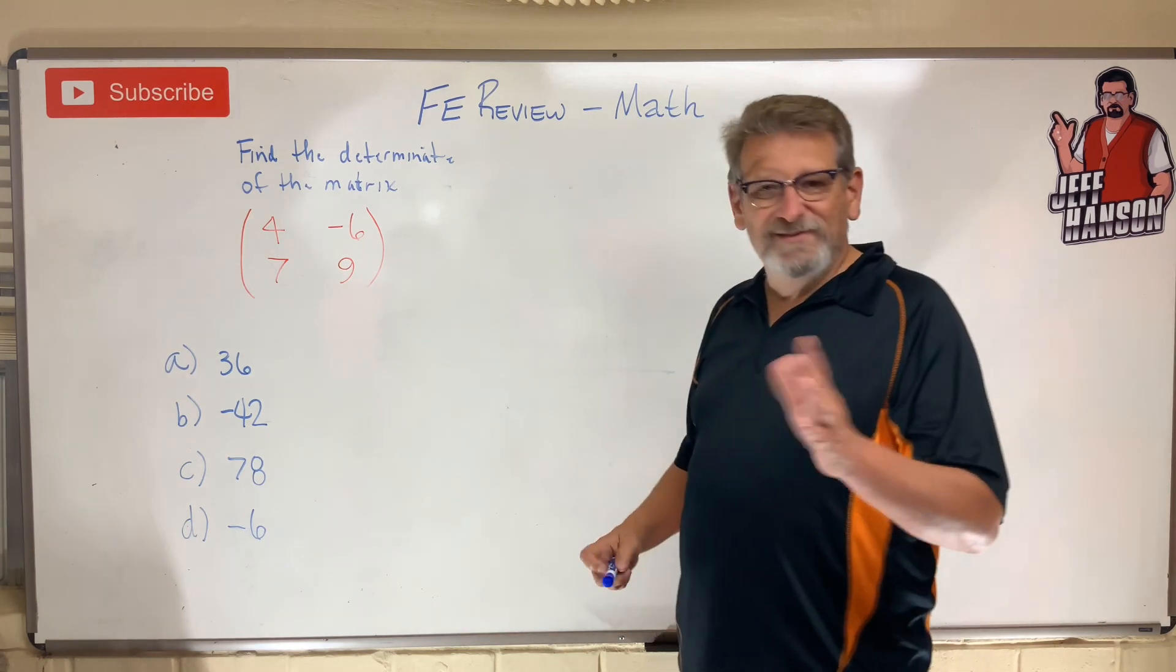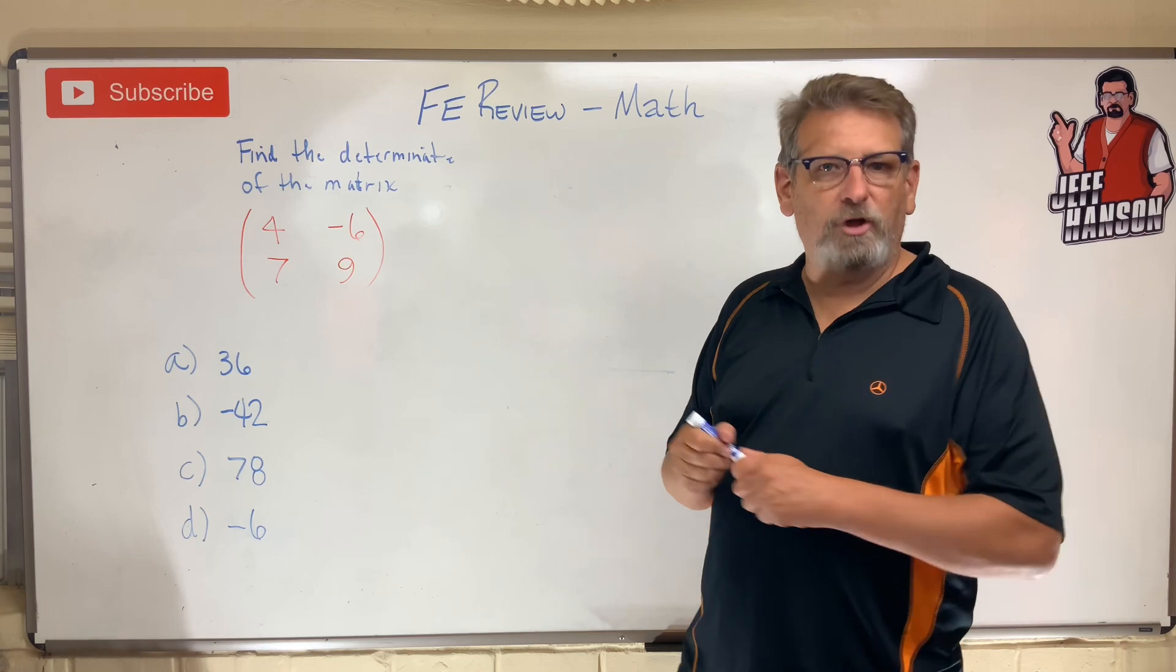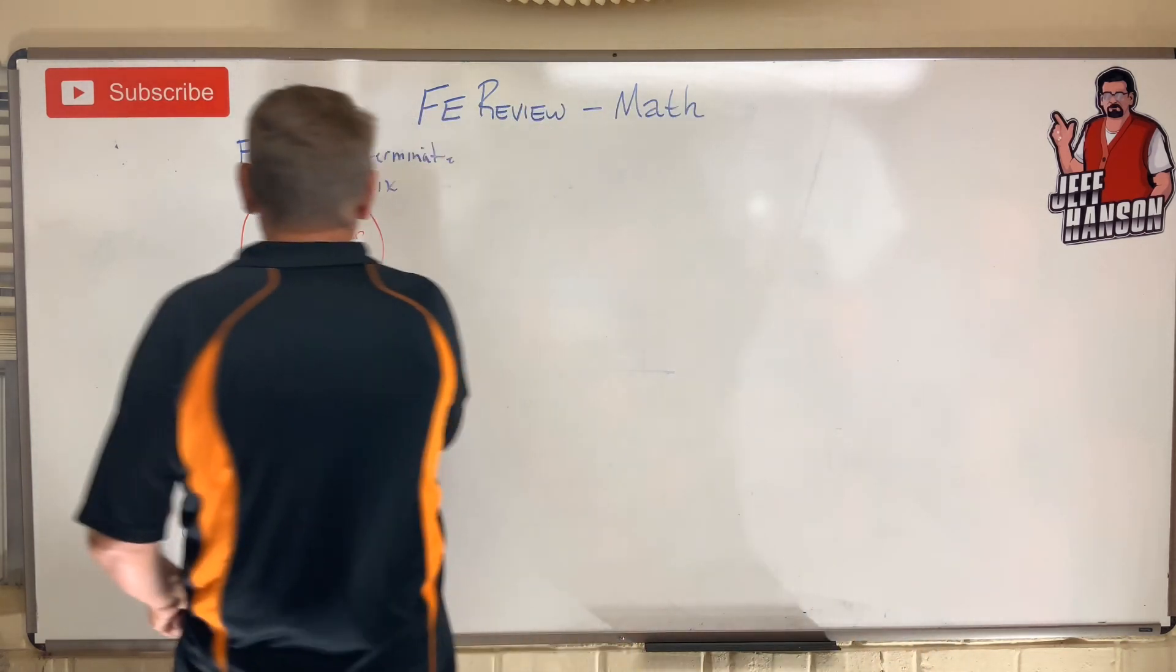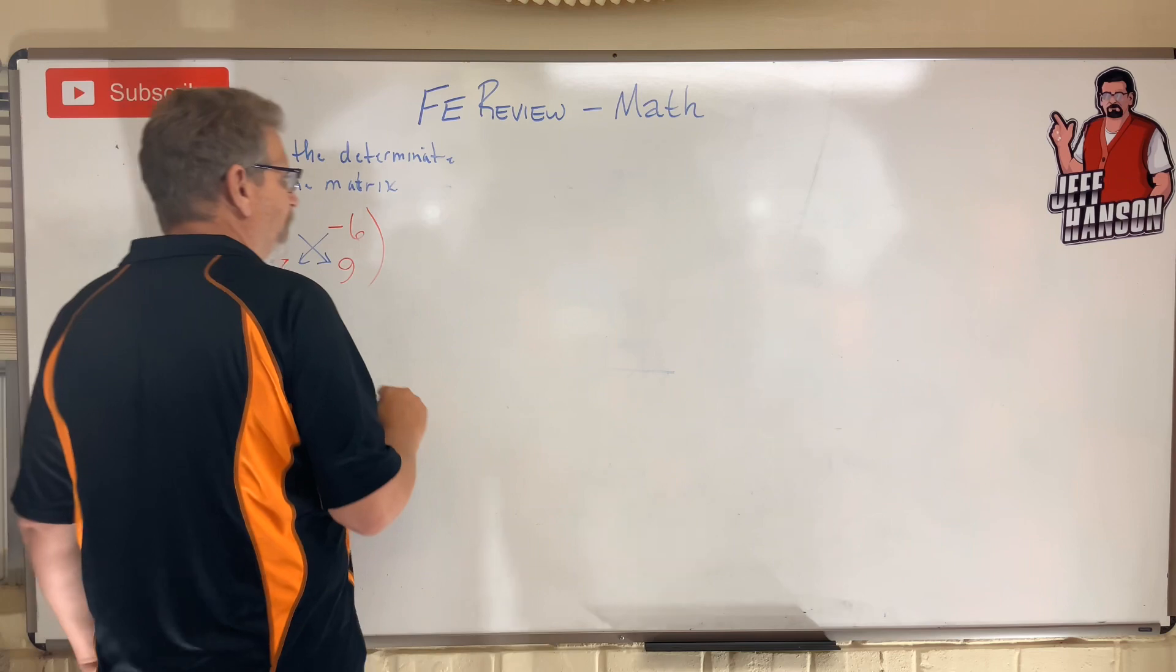How do you do it? Simple. Cross multiply, right? It's a cross product, okay? It's here minus there. Remember how to do that?